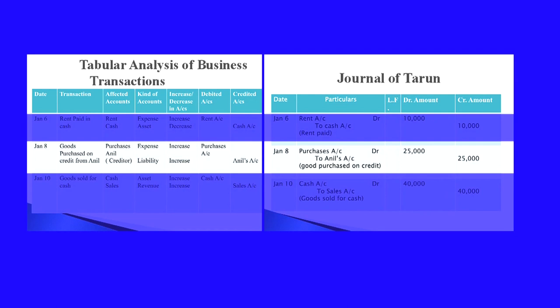On January 8th: goods purchased on credit from Annual. The two affected accounts are purchases and Annual — Annual is a creditor. Purchases being an expense comes under the expense account; Annual the creditor comes under liability. Purchases increase — goods are purchased on credit — so purchases account is debited. Annual is a liability and is increasing since payment is not made on that date, so Annual's account is credited. Purchases account is debited and Annual's account is credited.